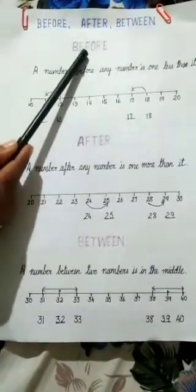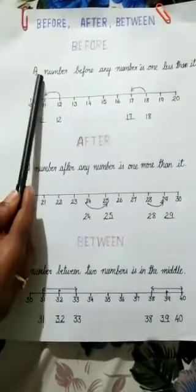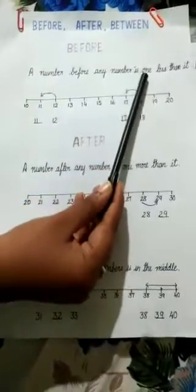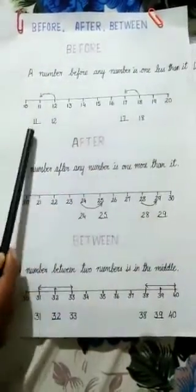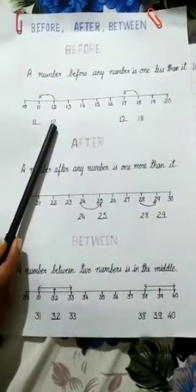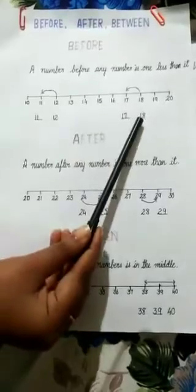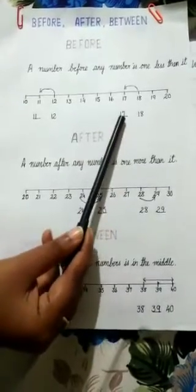Before. A number before any number is one less than it. Suppose what comes before 12 children? 11. What comes before 18? 17.